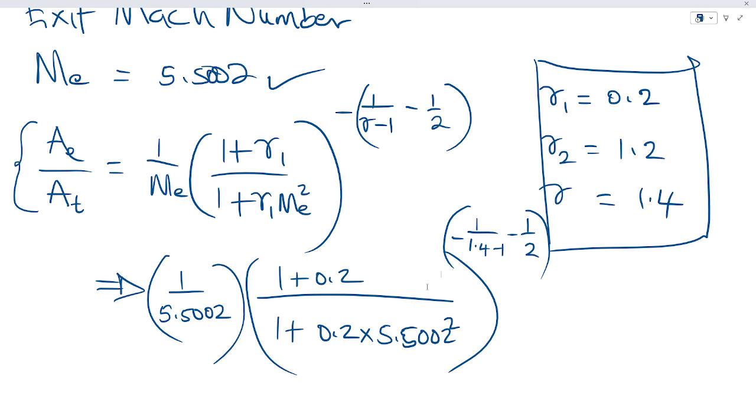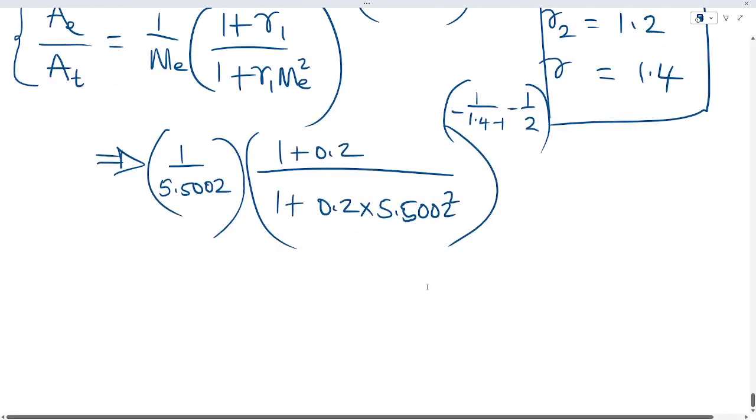By inputting all this value into a calculating machine, you can derive that the ratio of the exit to the throat equals 36.87.